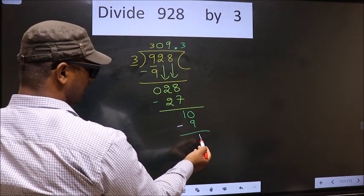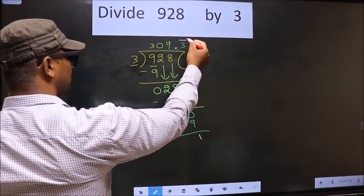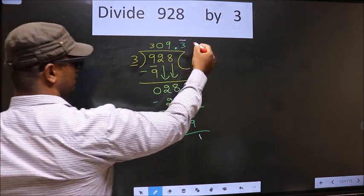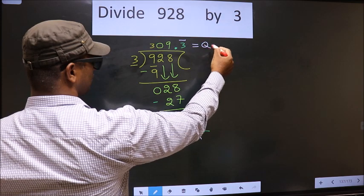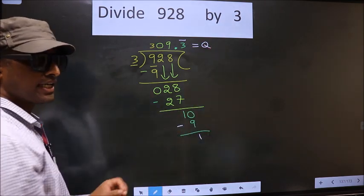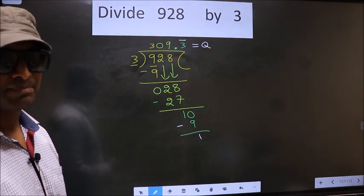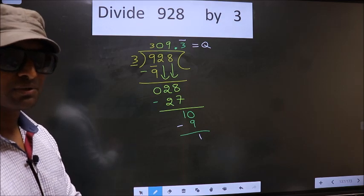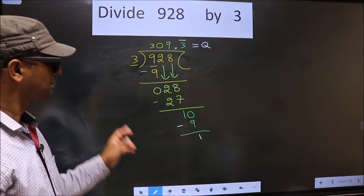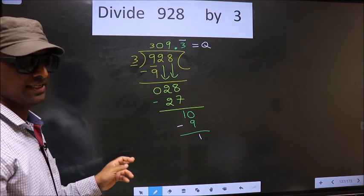We got 1 again. That means we get bar on this number. So this is our quotient. Did you understand where mistake happens? You should not do that mistake. Am I clear?